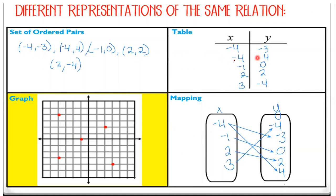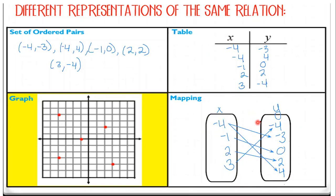Then we go to a table — you just write them side by side across from each other. The big difference is with the mapping: we go from least to greatest. And like we have two negative fours in the table, we only have one negative four in the mapping because we don't do repeats. So the domain is negative four, negative one, two, and three. The range is negative four, negative three, zero, two, and four. We drew the arrows to match the points. That's how we go from a graph to the three other forms.